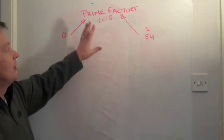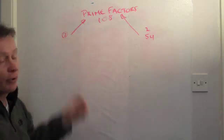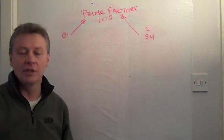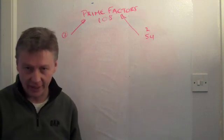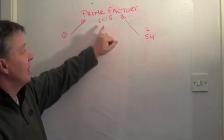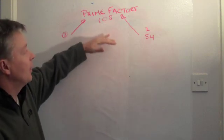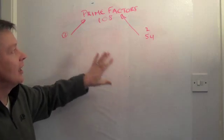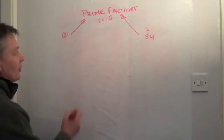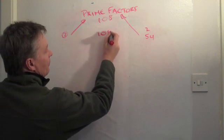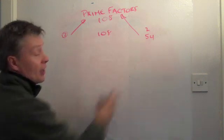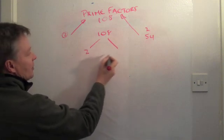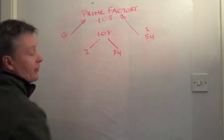So if you're asked to express 108 as a product of its prime factors, generally the way that we do it is to use something called a factor tree. Where basically we express that number as multiplications all the way down a little diagram, a little tree diagram. So we start with 108 at the top, and I'm going to say 108 is exactly the same as 2 times 54.